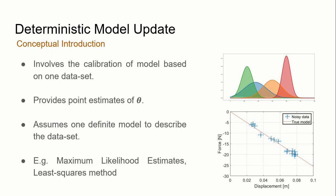And what we mean by point estimate is that there's only one definite answer to the input variables. And it assumes that there's one definite model to describe the dataset. So some common examples of deterministic model updating that we are so familiar with would be the maximum likelihood estimates and the least squares regression method as seen on the right.